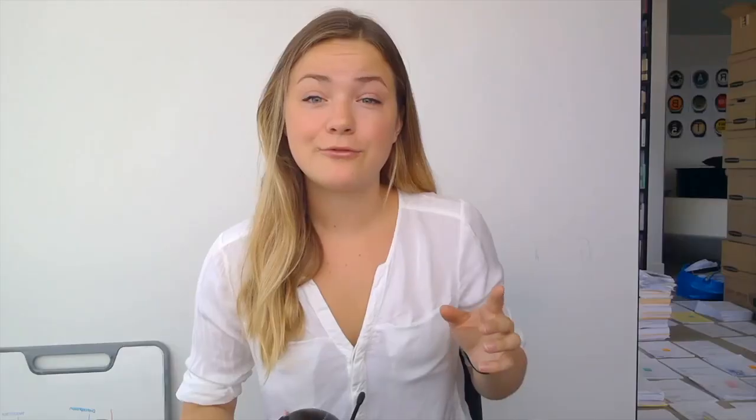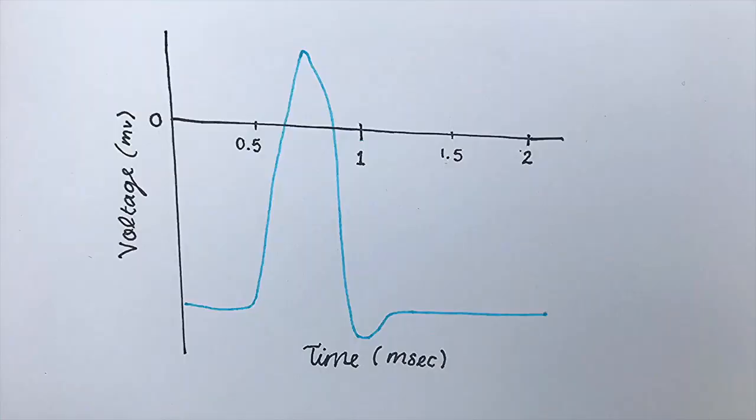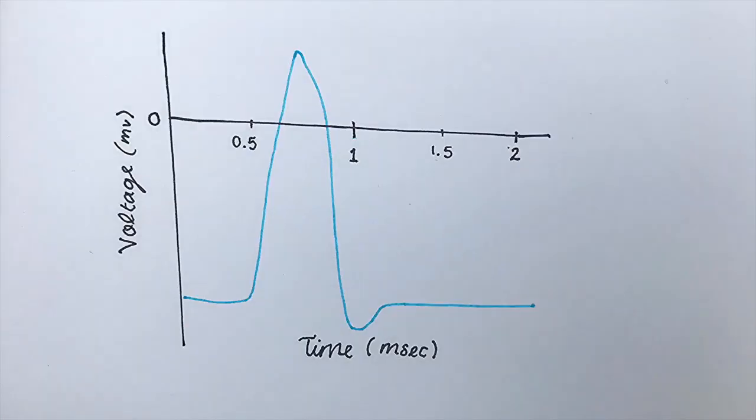However, the flattening of neuronal function to these on and off states does neglect the complexity of information processing that goes into deciding whether the action potential takes place. On any timescale smaller than around one millisecond, action potentials look like analog signals.